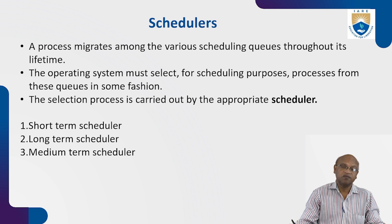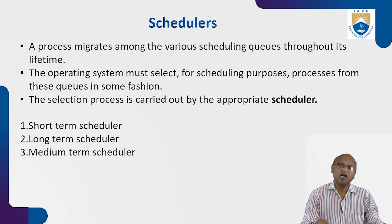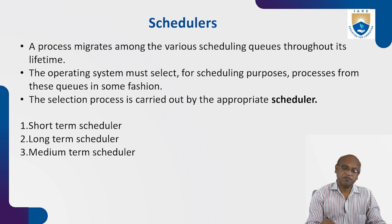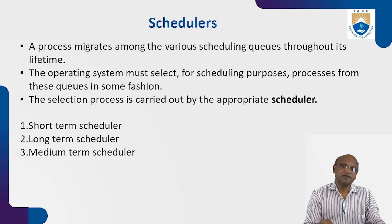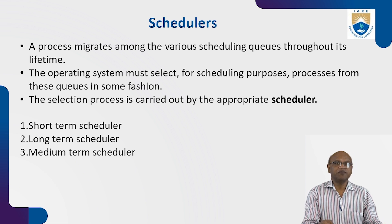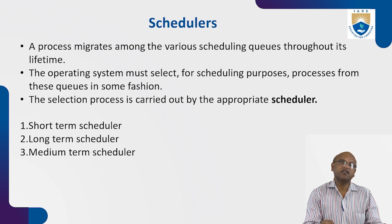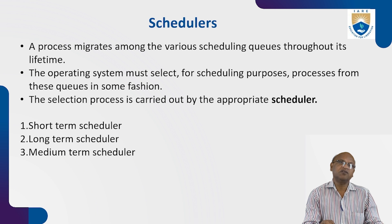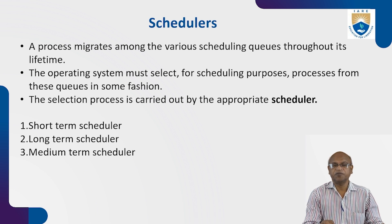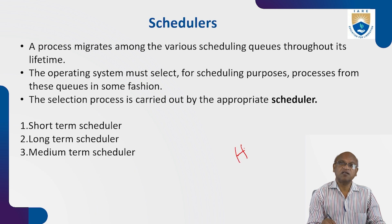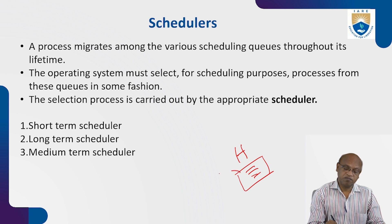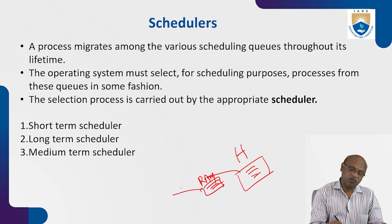In process management, whatever program we are writing is saved in the hard disk. When you want to run the program, it is available in the hard disk. The program migrates from hard disk to RAM, and from RAM to the CPU. RAM is nothing but your ready queue, and from the ready queue it goes to the CPU for execution.